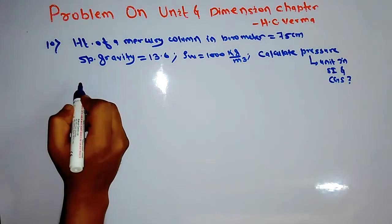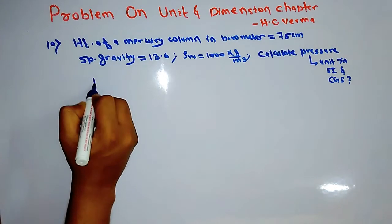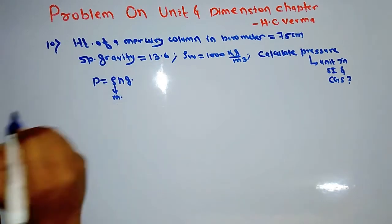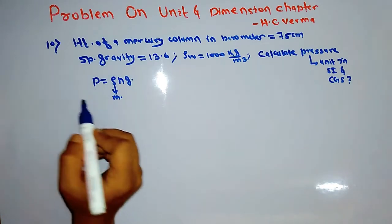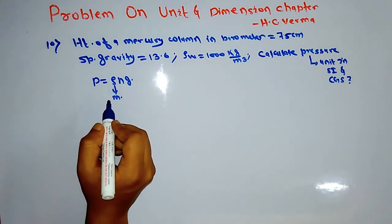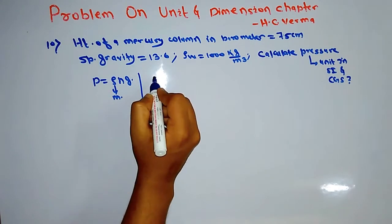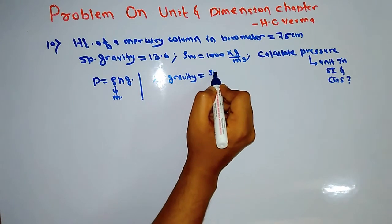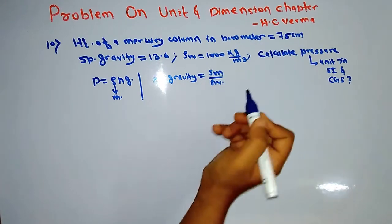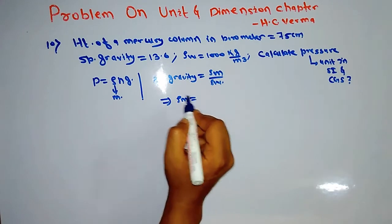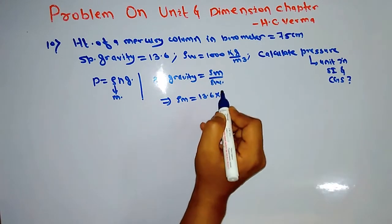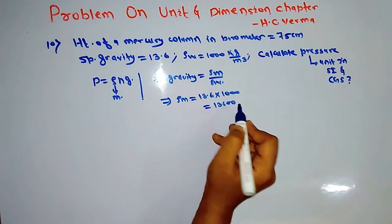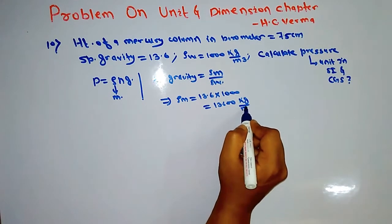For calculating pressure, we know the formula is P equals rho times H times g, where rho is the density of mercury. Since we are not directly given the density of mercury, we use the formula: specific gravity equals density of mercury upon density of water. So density of mercury equals 13.6 into 1000, which gives 13600 kg per meter cube.